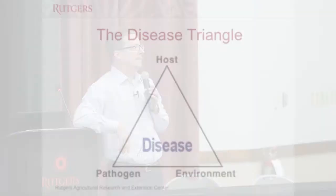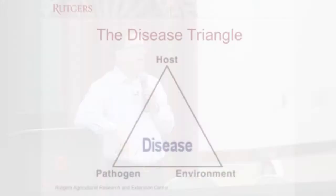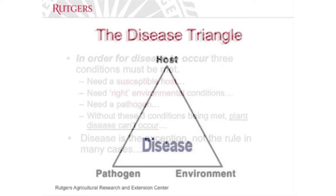Good afternoon, everybody. This is what we call the disease triangle. It's your basic understanding of plant disease in your home garden. What it consists of is three things: you need a host, you need a pathogen, and you need the right environment. Without all three of those things being present in your garden, you can't have plant disease.